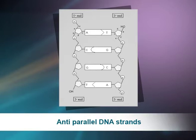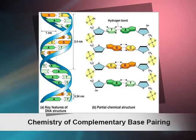The orientation of the two strands of DNA is anti-parallel — their 5' to 3' directions are opposite. The members of each base pair can fit together within the double helix only if the two strands are anti-parallel. Each strand of a DNA molecule contains a sequence of nucleotides exactly complementary to the nucleotide sequence of its partner strand. The strands are linked by regular base pairing: adenine is paired with thymine through two hydrogen bonds, and guanine is paired with cytosine through three hydrogen bonds, as shown in the figure demonstrating the chemistry of complementary base pairing.